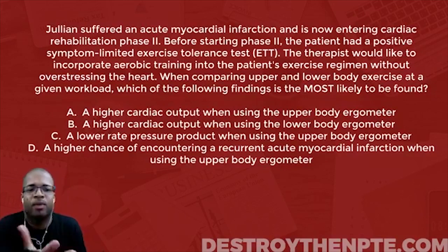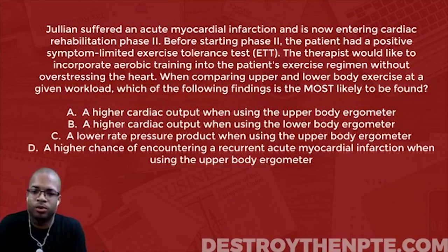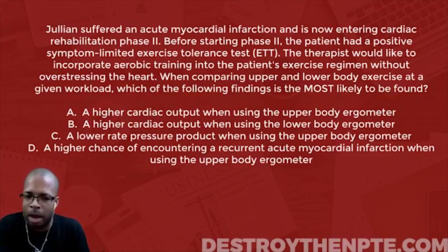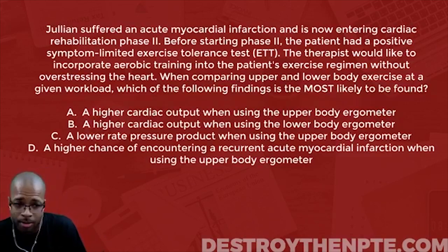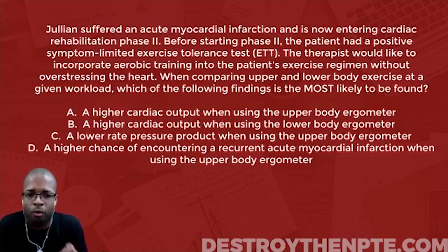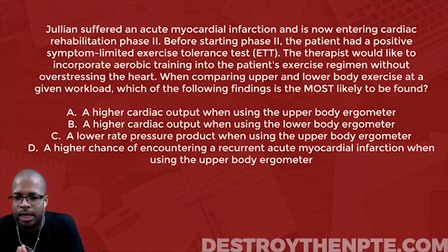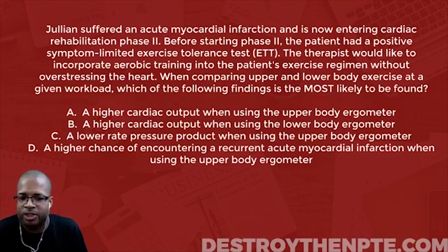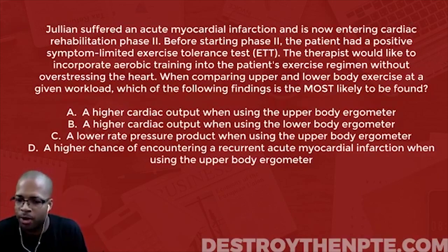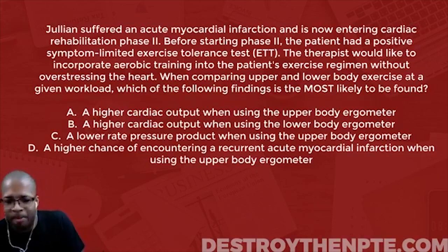Answer A is a higher cardiac output when using the upper body ergometer. B is a higher cardiac output when using the lower body ergometer. C is a lower rate pressure product when using the upper body ergometer. And D is a higher chance of encountering a recurrent acute myocardial infarction when using the upper body ergometer.